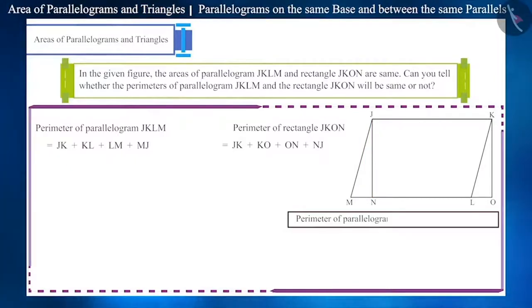Friends, the formula for the perimeter of a parallelogram is two times the sum of opposite sides. Since the opposite sides of the parallelogram are equal, we can write it like this also. For parallelogram JKLM as 2JK plus 2MJ, and for rectangle JKON as 2JK plus 2NJ.